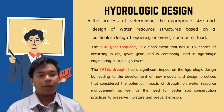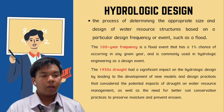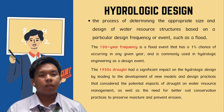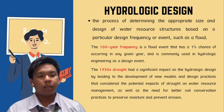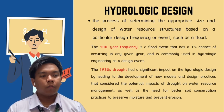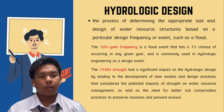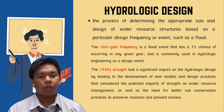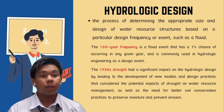The second hydrologic design is based on the 1930s drought. This drought prompted the development of new models and practices, including considering the effects of drought on water resource management and emphasizing soil conservation to preserve moisture and prevent erosion.